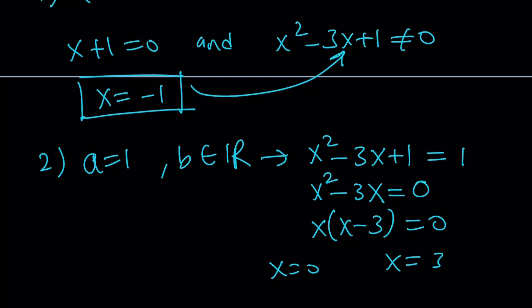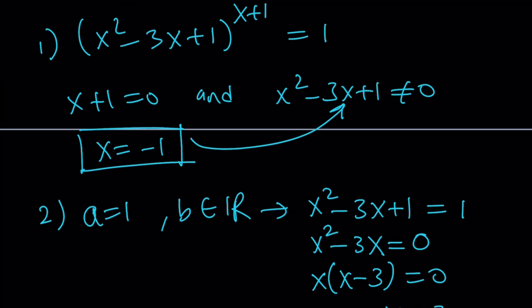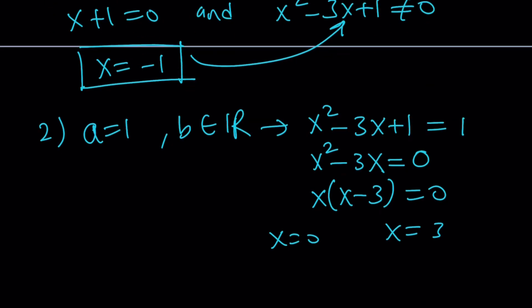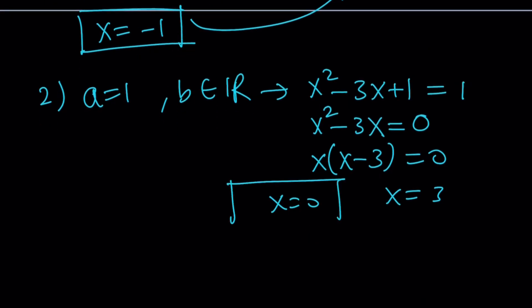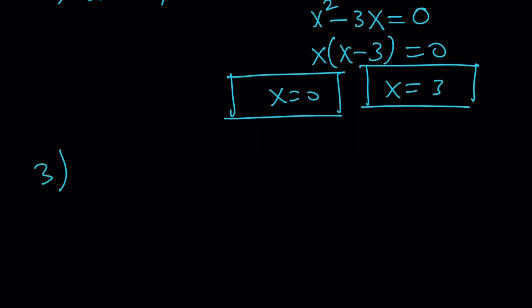Now let's talk about the validity of these solutions. Are they both going to work? Well, if you plug them in, you're going to get 1 to the power of something. It doesn't matter as long as the base is 1. We're good, so they're both good. x equals 0 and x equals 3. So far we've got three solutions. Let's go ahead and take a look at the third case scenario.